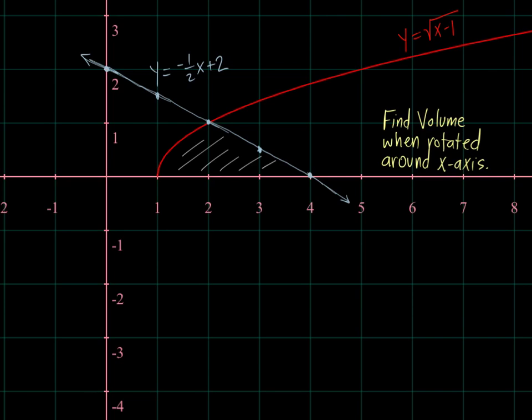So we're going to focus on this same area. It's contained between the x-axis, the red graph which is the square root of x minus 1, and the light blue which is negative one-half x plus 2. So I've got the area shaded. We're going to keep using that same area and the first thing we're going to do is rotate it around the x-axis.